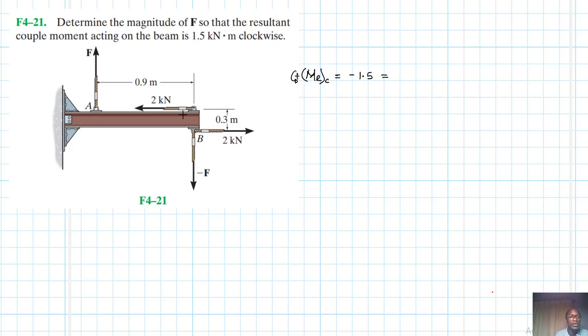So this is equal to: we do have F, F is in the clockwise direction so we'll have minus F times the lever distance 0.9, and then we do have 2 which is anticlockwise, so this is 2 times 0.3. Okay, right, we have that.